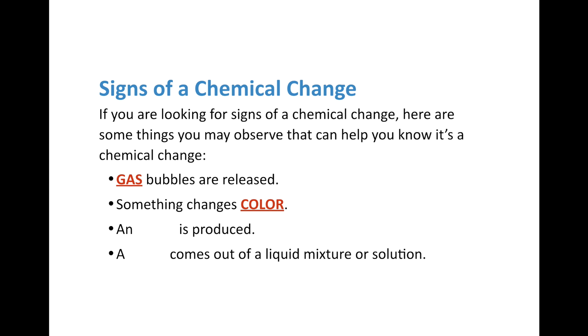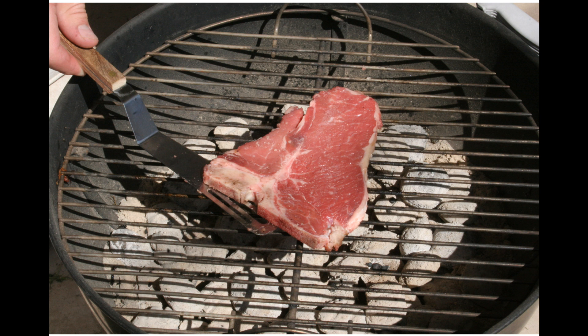We also have gas bubbles released, color changes, and odor being produced — a smell. A great example is cooking. If you're grilling a steak, you hear the sizzle and smell the cooked meat. That's a sign of a chemical change. The heat is cooking the meat, breaking down proteins and acids, changing them. So the smell of cooking is actually a sign that a chemical change is taking place.